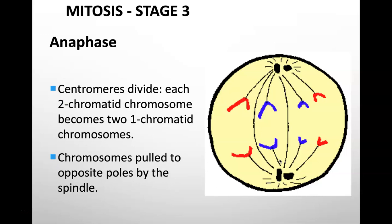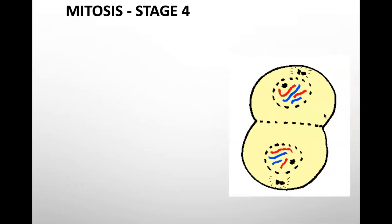Mitosis stage three, remember is anaphase. Ana means back. So we're going to pull those chromosomes back and split them down the middle. Centromeres divide. Each two sister chromatid chromosome becomes one chromatid chromosome. Chromosomes are pulled to the opposite ends by those spindle fibers. The spindle fibers job is to hold on to the centromere of each chromosome. And then they start to split off and retract back into the centrioles.